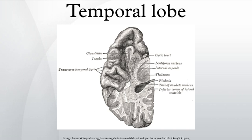Along with the surrounding hippocampal region consisting of the parahinal, parahippocampal, and entorhinal neocortical regions. The hippocampus is critical for memory formation, and the surrounding medial temporal cortex is currently theorized to be critical for memory storage. The frontal and visual cortices are also involved in explicit memory.